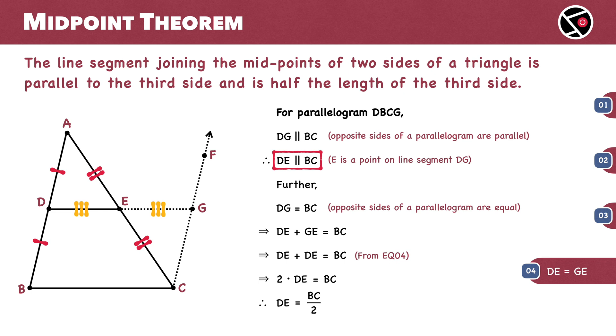This completes the proof of the midpoint theorem. The line segment joining the midpoints of two sides of a triangle is parallel to the third side and half its length.